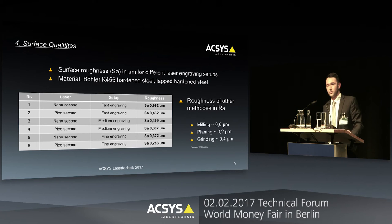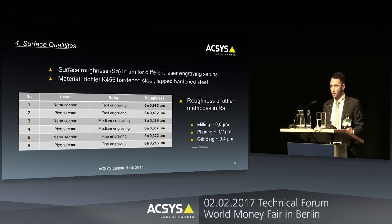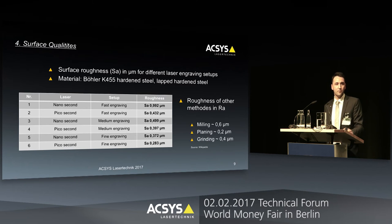The first test was to do the engraving and then measure the surface quality — the surface roughness. What we can see is that the picosecond laser, in comparison to the nanosecond laser, always gives us better surface roughness quality. We can also see that in the fine engraving, the nanosecond laser is very close to the picosecond laser result. But as engraving speed increases, the roughness for the nanosecond laser gets very poor.